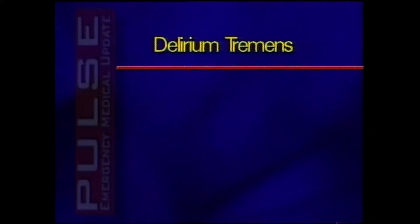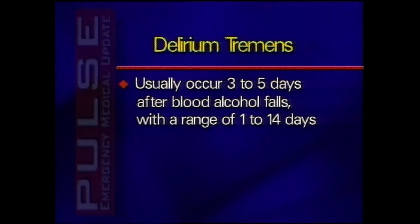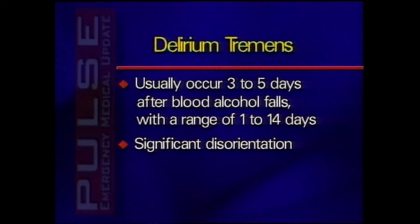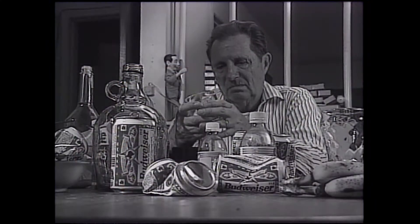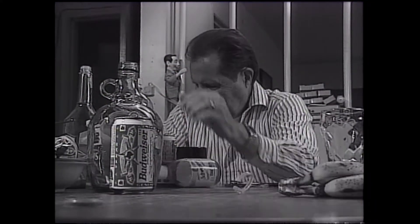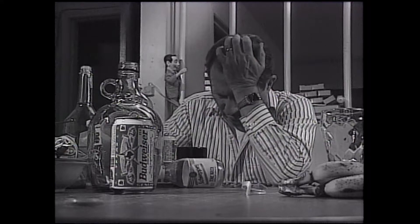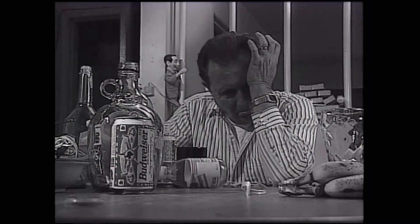Alcoholics are also prone to hypoglycemia, electrolyte imbalance, head injuries, and other conditions that may cause seizures. Delirium tremens, or the DTs, usually occur 3 to 5 days after the blood alcohol level falls, within a range of 1 to 14 days. DTs are characterized by significant disorientation, excessive speech, and motor activity. The patient may, however, have brief moments of insight and reality. Mortality from the DTs is reported as somewhere between 5 and 10 percent.